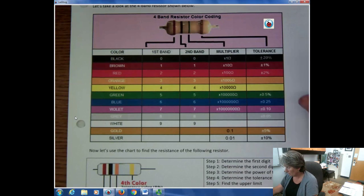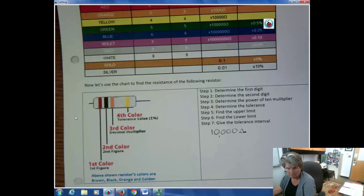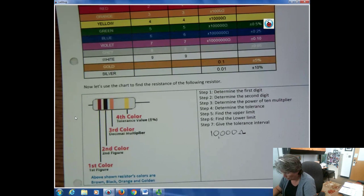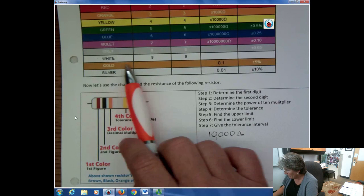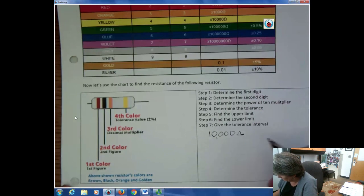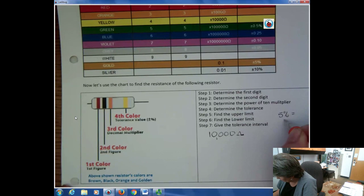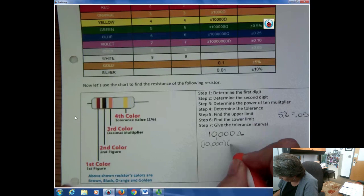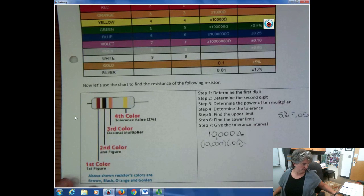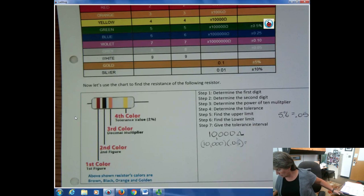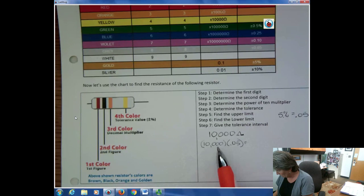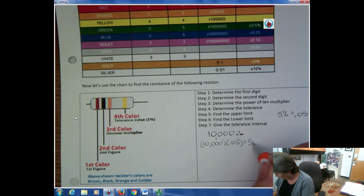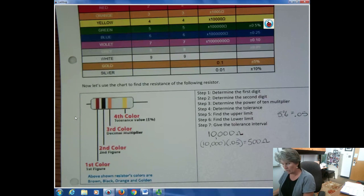Now we determine the tolerance from that last band, which is gold. From the chart, gold means plus or minus 5%. To work with that, I convert 5% to a decimal by moving the decimal two places to the left, giving 0.05. Then I multiply 10,000 times 0.05. Multiplying by 10,000 moves the decimal four places, so I calculate the result step by step.